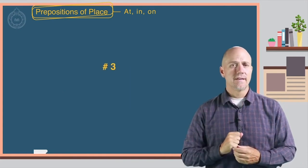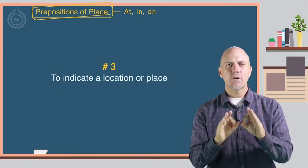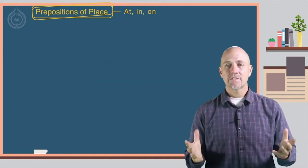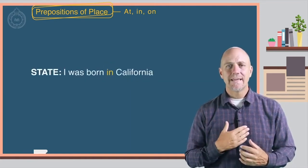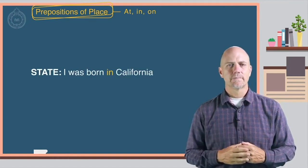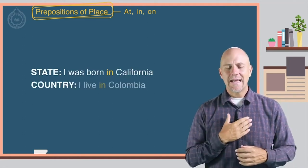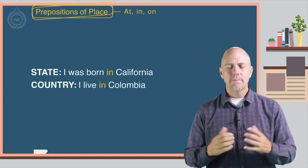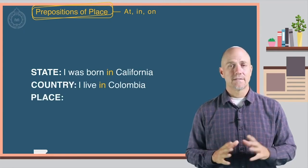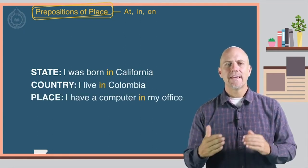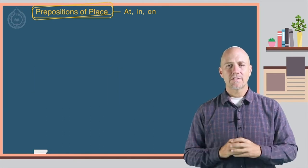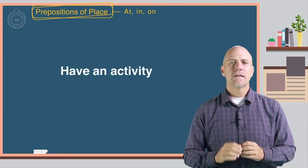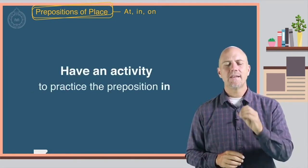Number three: to indicate a location or place. Here are some examples. A state: I was born in California. Or a country: I live in Colombia. Or a place: I have a computer in my office. The video will now stop and you will have an activity to practice the preposition in.